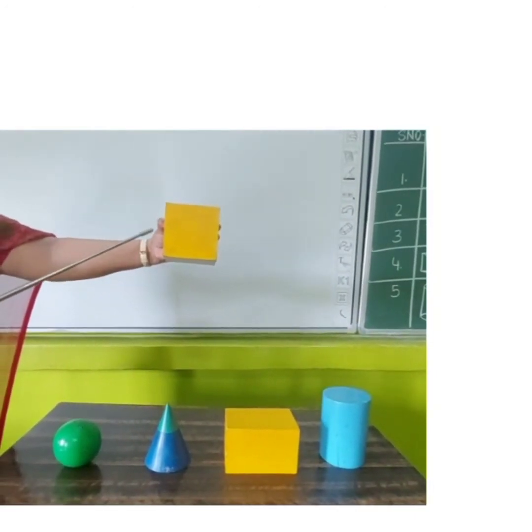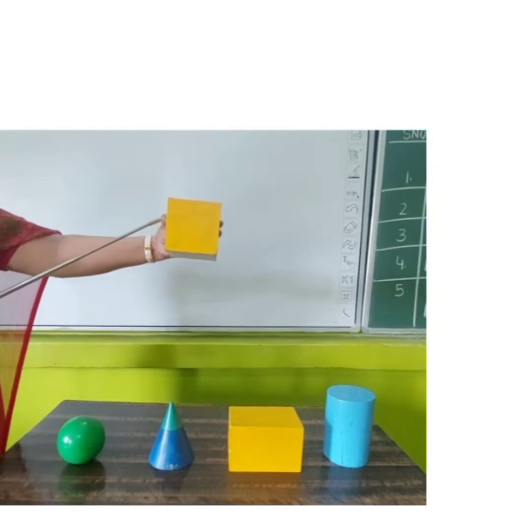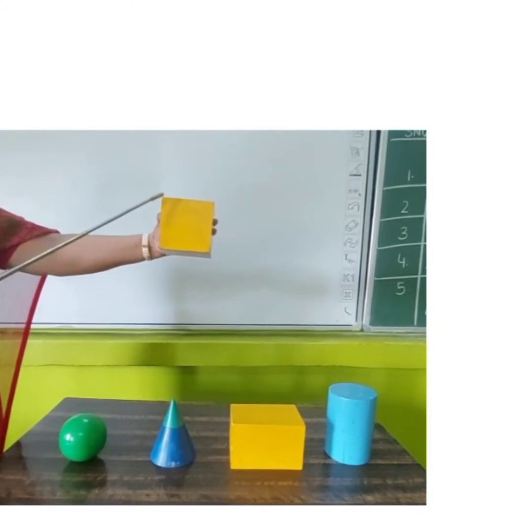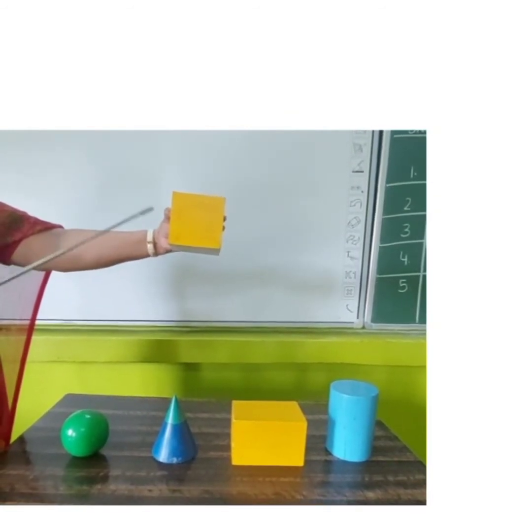Our third 3D shape is cube. It has six faces, twelve sides and eight corners.